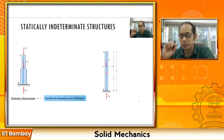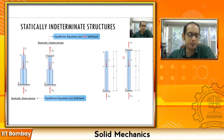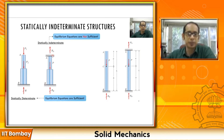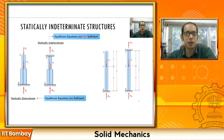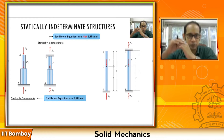Compared to these statically determinate structures where equilibrium equations are sufficient to solve the problem, if we look at statically indeterminate structures — for example one that is clamped at the base and clamped at the top, a fixed-fixed condition — and you are applying a load P at an intermediate point where the cross-section changes, since it is fixed at both top and bottom B, there is no overall deformation. But the question is what are the internal loads and reactions, and does the point where the cross-section changes move up or down?